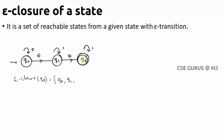Since Q0 → Q1 (epsilon) and Q1 → Q2 (epsilon), we can say Q0 → Q2 via epsilon transitively — similar to: if A → B and B → C, then A → C. So Q0 can reach Q2 without any input. Therefore, ε-closure(Q0) = {Q0, Q1, Q2} — all states reachable from Q0 via epsilon transitions, including Q0 itself.